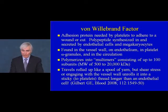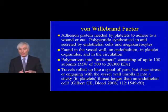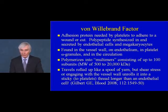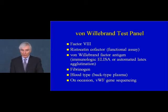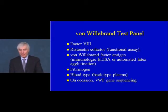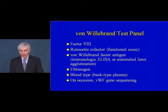Von Willebrand factor travels rolled up like a spool of yarn, but shear stresses — or engaging the vessel wall in the presence of shear stresses — allow it to unravel into a sticky thread longer than even an endothelial cell, facilitating hemostasis. The test panel for diagnosis includes a factor VIII level, a functional measure called ristocetin cofactor activity, von Willebrand factor antigen, circulating fibrinogen, blood type, and on occasion gene sequencing for specific mutations in the von Willebrand factor gene.